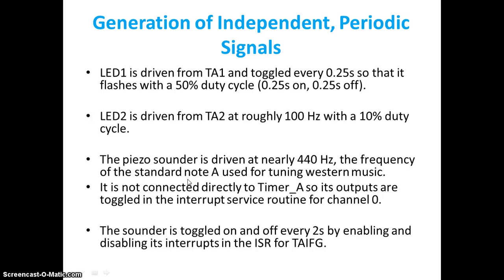Before getting into this scenario, we require mainly three components: a 0.25-second delay, 100 Hz with 10% duty cycle, and 440 Hz, and finally a 2-second delay. To get a 2-second delay, obviously I need to go for an auxiliary clock — that is the ACLK. With ACLK I get a maximum delay of 2 seconds at full count FFFFH. That is why I will take ACLK and from that frequency try to derive 0.25 seconds, 100 Hz, and 440 Hz.